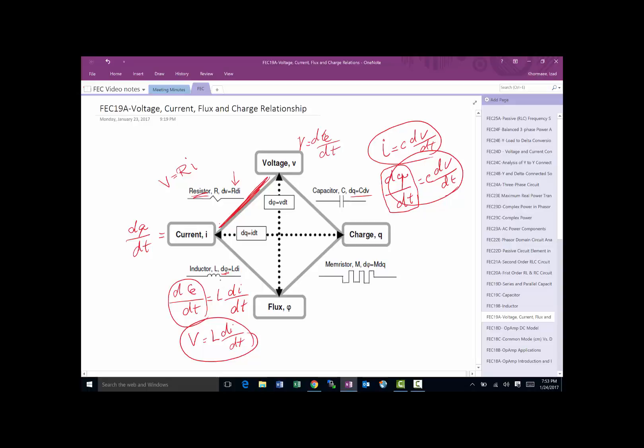Finally, this is called the memristor. It's been about 30 years since somebody theoretically drew this graph and said, 'We've got capacitor here, resistor here, inductor here—there must be something here.' They conjectured that there would be something relating change in flux with change in charge, and called it the memristor.